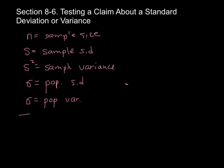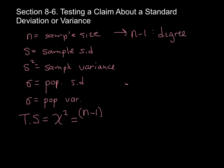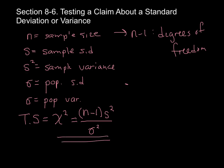Our test statistic that we're going to use in testing a claim about a standard deviation is going to be chi-squared. So we're going to be using a chi-squared distribution, and our chi-squared formula is n minus 1. If n is our sample size, then n minus 1 is our degrees of freedom. So it's n minus 1 times our sample variance, or sample standard deviation squared, over our population variance, or population standard deviation squared.